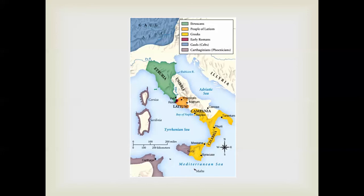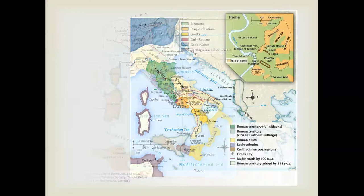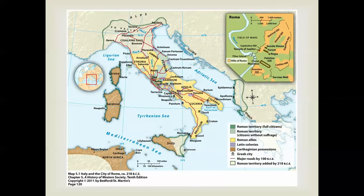Further consolidation included the construction of roads. Roads became essential to running the empire for communication purposes, for the moving of goods, for trade, and most importantly, for the movement of the army to get it from one end of the peninsula to the other.